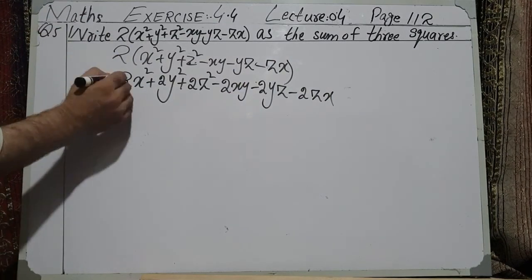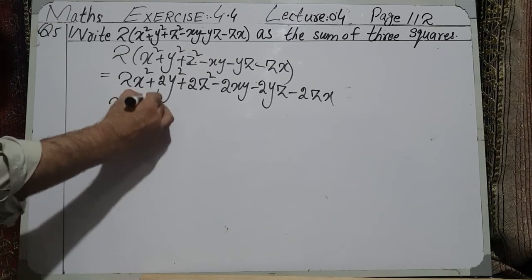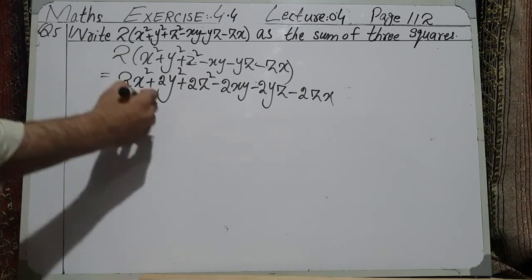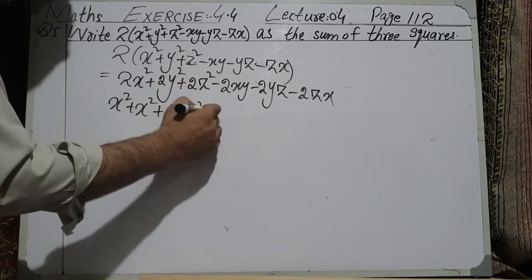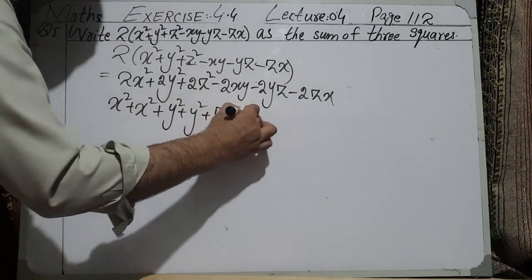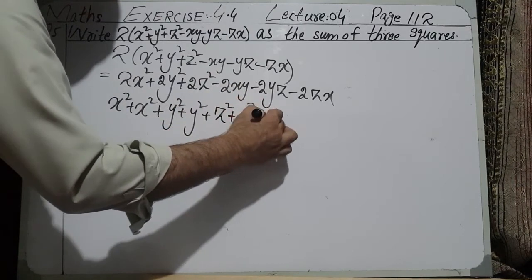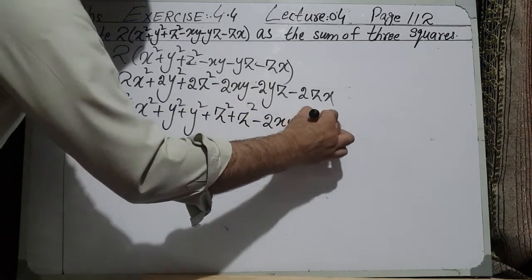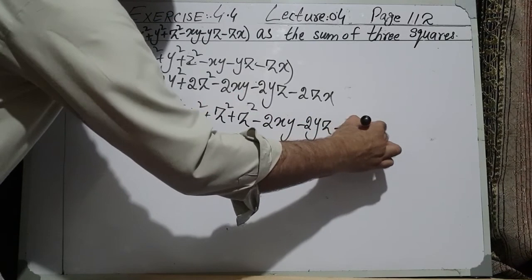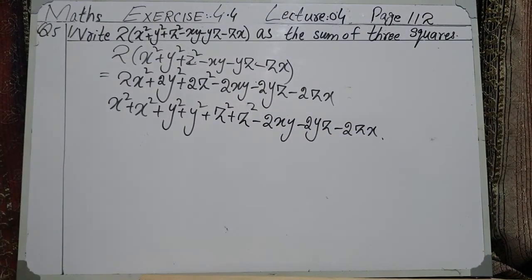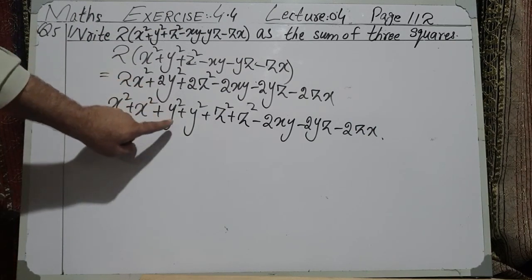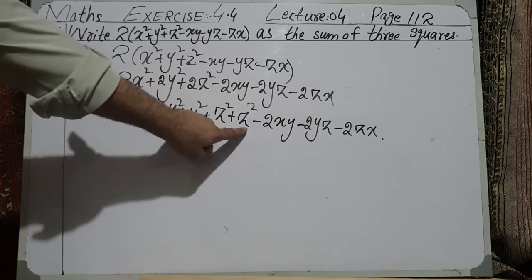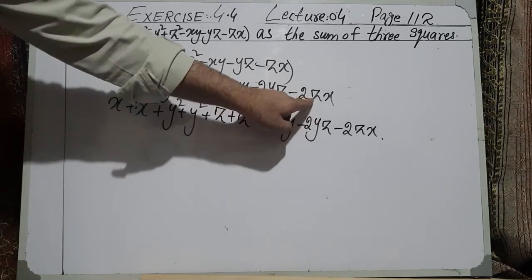Now I write 2x² as x² + x², because one x² plus one x² gives two x². Similarly, 2y² becomes y² + y², and 2z² becomes z² + z². Then we keep -2xy, -2yz, and -2zx as they are.